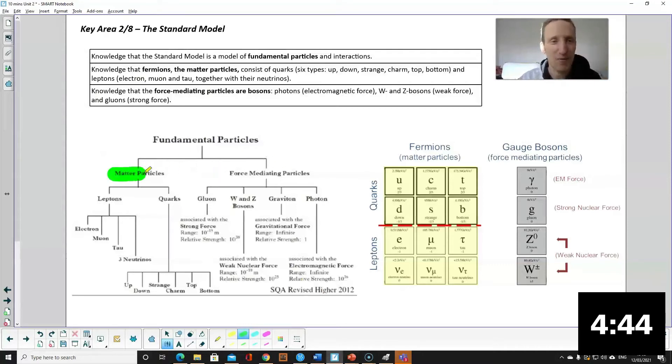You basically have two halves. You have what we call the matter particles. They're called fermions and responsible for making up matter and subdivided into leptons and quarks. You do need to know the six quarks and the six leptons.